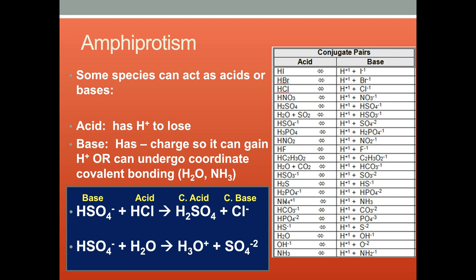However, HSO4- also can lose an H. When HSO4- turns into SO4-2, it loses an H, meaning that it acts as an acid. The H2O picks up that H to form H3O+. When H2O gains the H, the base turns into its conjugate acid.